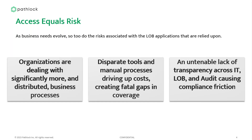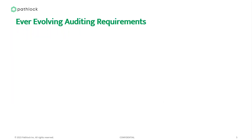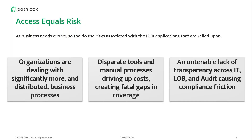Business needs are evolving quickly, and with that comes the rapid expansion of line-of-business applications. Those applications require effective access strategies. We typically encounter three common situations when engaging with organizations on access governance. First, you're dealing with significantly more distributed business processes because of the proliferation of line-of-business applications. We have scale to consider, processes spanning multiple applications, and all of these applications require fine-grained access visibility to be effective.